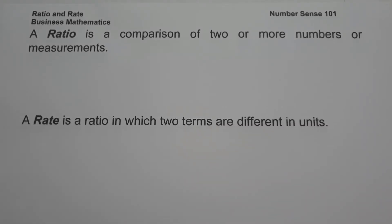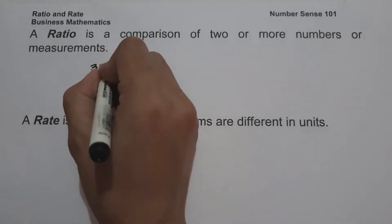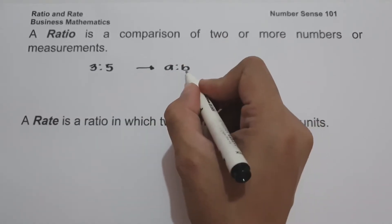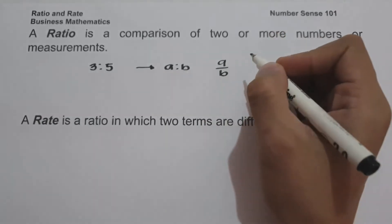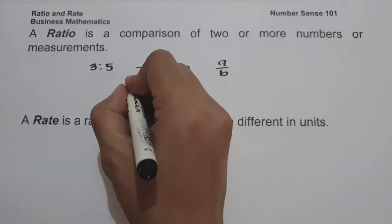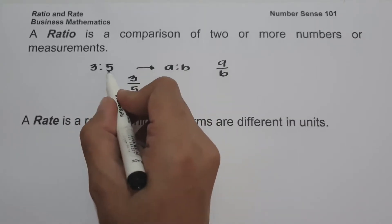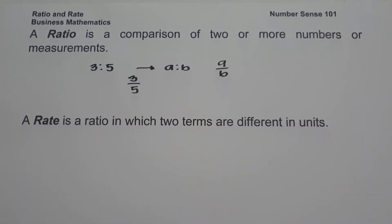For today's video we are going to talk about what is ratio and rate. When you say ratio, it is a comparison of two or more numbers or measurements. For example, three is to five is an example of ratio, written in the form a is to b. A is to b can be written as a fraction, that is a over b. Rate is a ratio in which two terms are different in units.